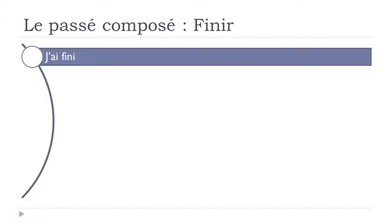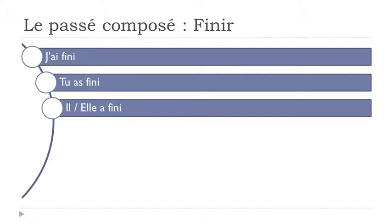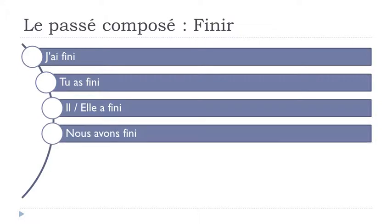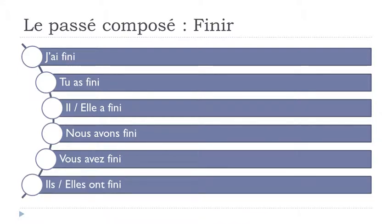J'ai fini. Tu as fini. Il a fini. Feminine form: Elle a fini. Nous avons fini. Vous avez fini. Ils ont fini. Elles ont fini.